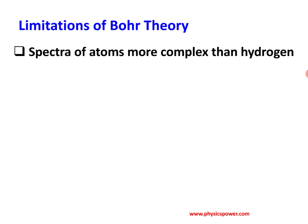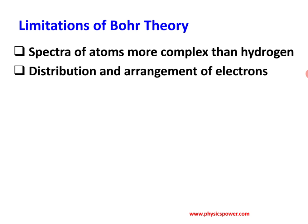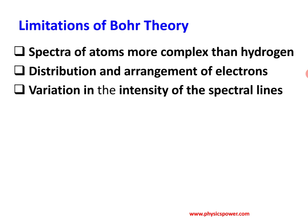If an atom consists of more than one electron, he was unable to give a clear picture about the spectral lines. The next drawback is the distribution and arrangement of electrons — how electrons are distributed inside the atom. He was unable to give details about how many electrons are in the first orbit, how many in the second, how many in the third.